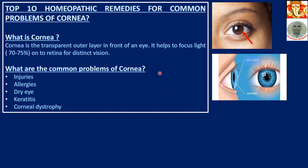Top 10 Homeopathic Remedies for Common Problems of Cornea. What is the cornea? The cornea is a transparent outer layer in front of the eye. It helps to focus light 70-75% onto the retina for distinct vision. The white portion is called sclera, and the brown color behind the top portion is the iris. The central dot is the pupil.